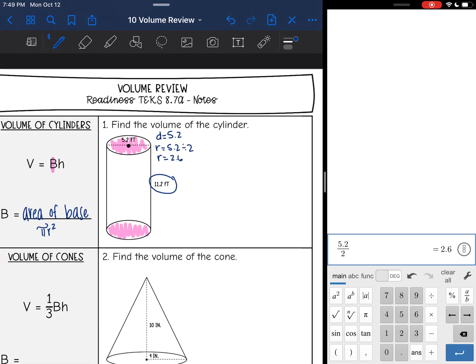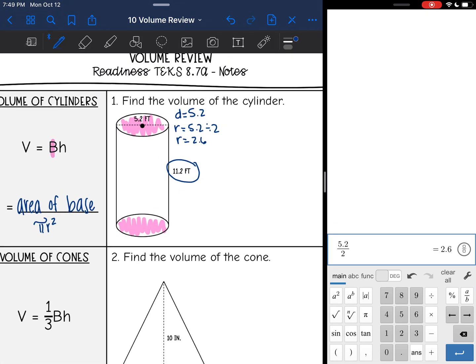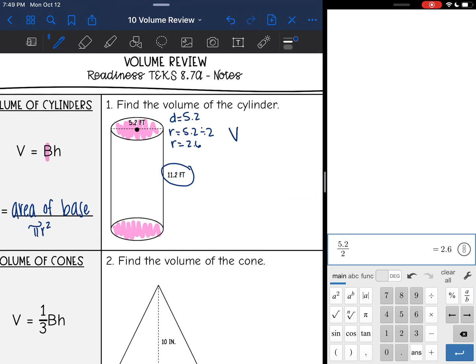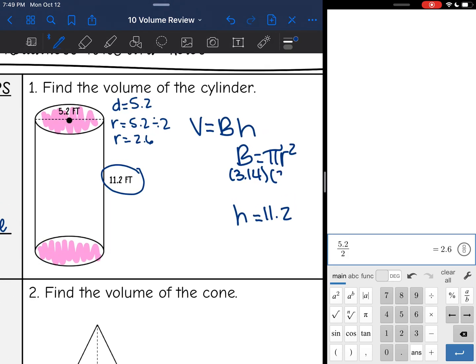All right, now I have everything I need to find the volume of this cylinder. I'm going to do V equals BH. So I will need B, which is pi r squared, and the height I circled it, it's 11.2. So let's find B by doing 3.14 times my radius of 2.6 squared.